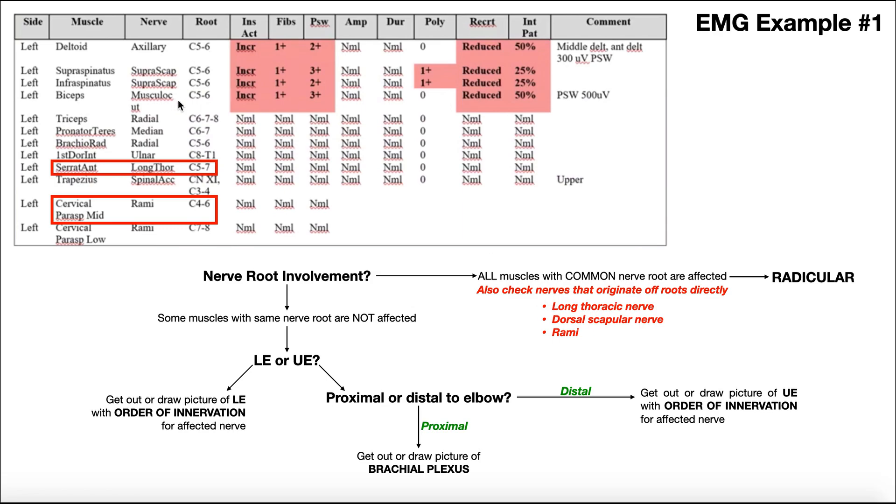Now in this analysis, we did have the long thoracic nerve that was tested. The dorsal scapular nerve was not tested, but the rami were tested. Now with the long thoracic nerve right here, it's normal. That strongly rules down a radiculopathy. And also the rami in total were also normal. That also strongly rules down a radiculopathy.